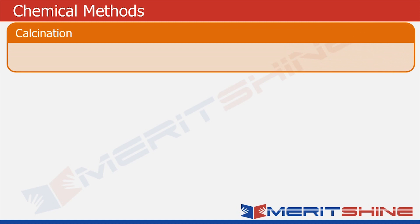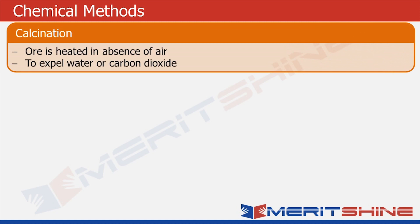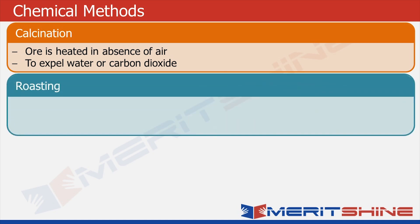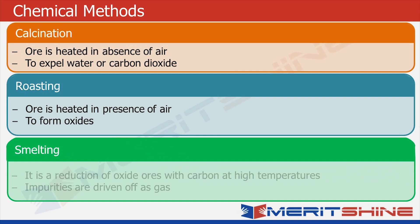There are three important chemical methods. First is calcination — a process in which ore is heated generally in the absence of air, used to expel water or carbon dioxide. Second is roasting — ore is heated usually in the presence of air. Third is smelting — the reduction of oxide ores with carbon at high temperature.